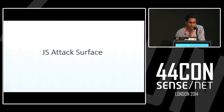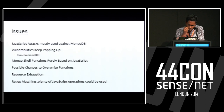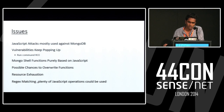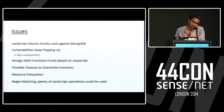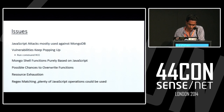The JavaScript attack surface. JavaScript attacks are used mostly against MongoDB because MongoDB uses the JavaScript engine. It used the SpiderMonkey JavaScript engine for versions 2.4 and below, and for versions 2.4 and above it switched to Google's V8 JavaScript engine. This is one of the major changes that Mongo has evolved. Vulnerabilities keep popping up in MongoDB — there was a recent vulnerability for command execution in MongoDB for versions 2.2 and below. There are possible chances to overwrite Mongo-defined shell functions, and there are lots of resource attacks and extension attacks also possible.